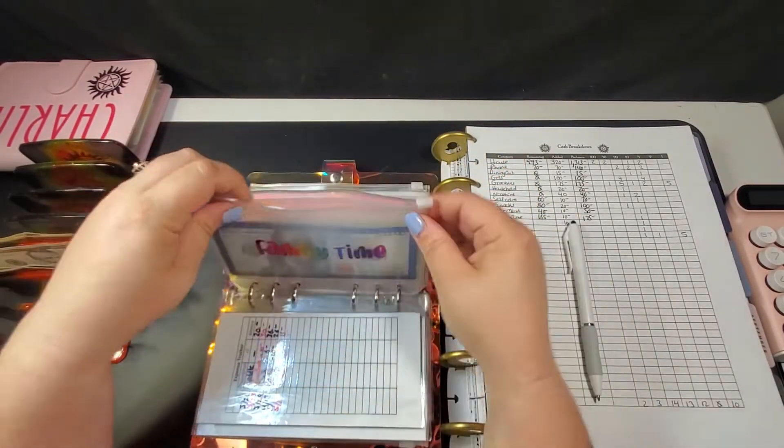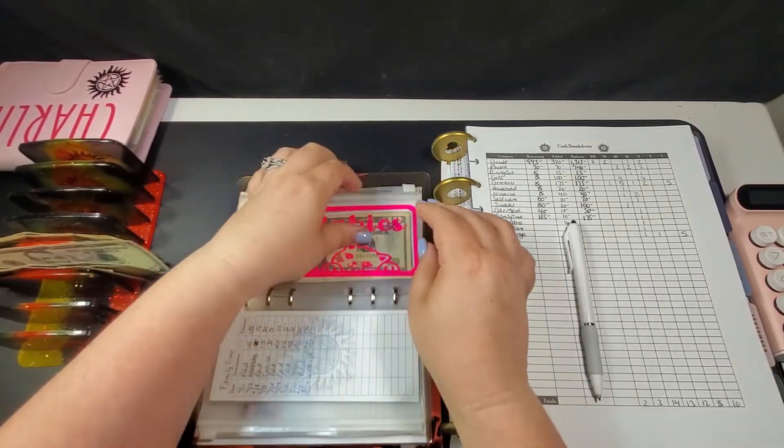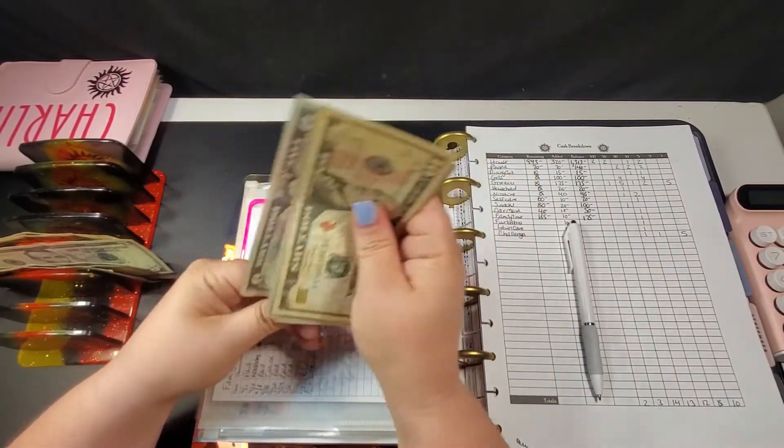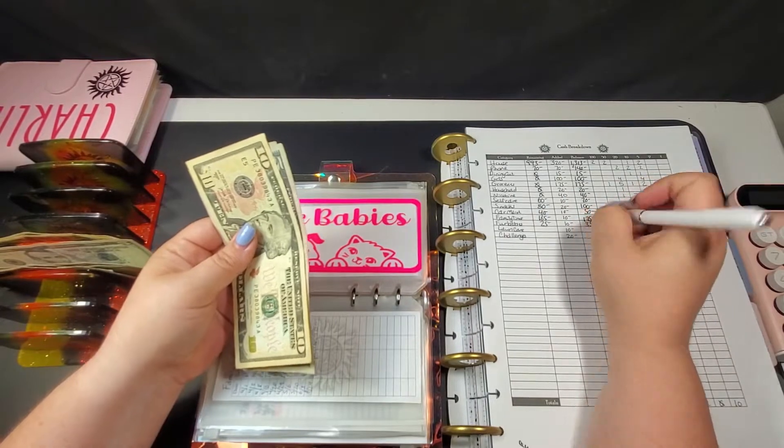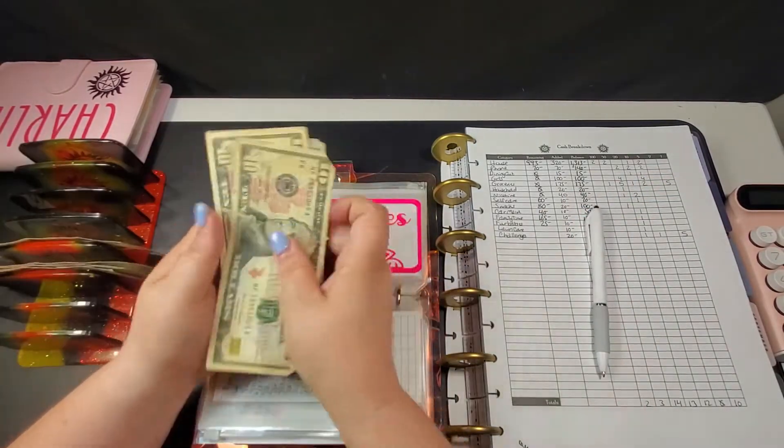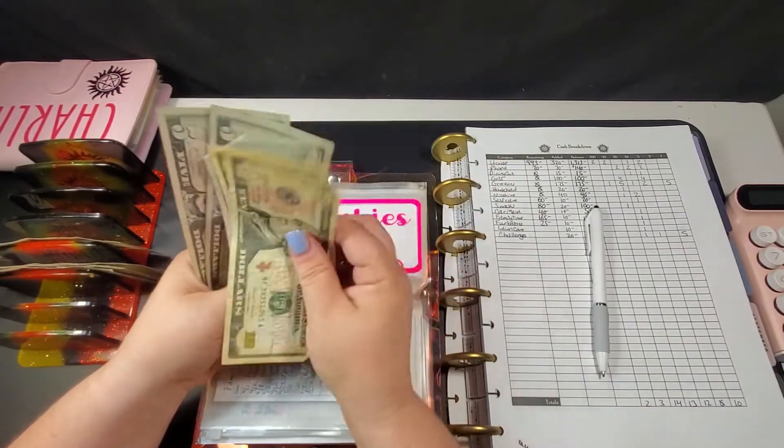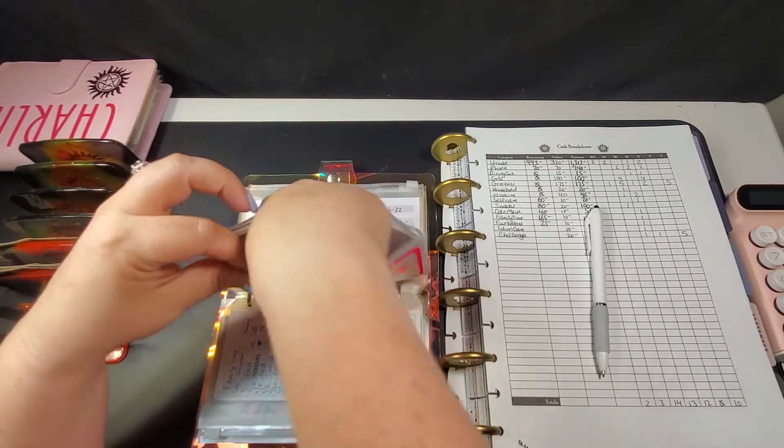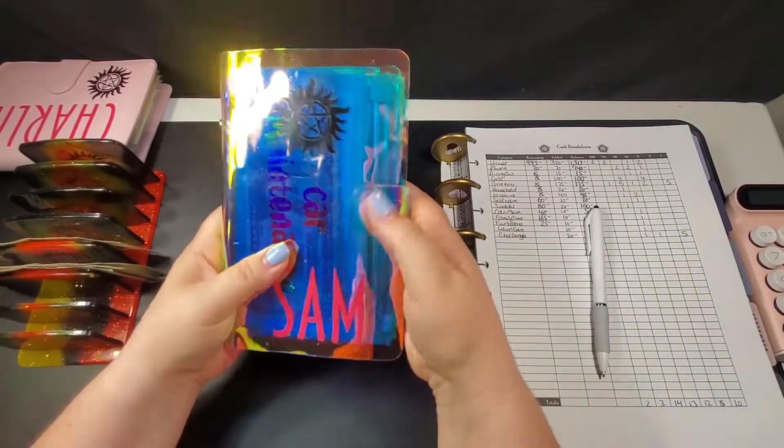Now over to fur babies. It currently has $25, and it'll be getting $10 today, which will give us $35. [Stuffs cash] And that will complete Sam.